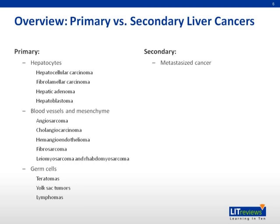Here's an overview of liver cancers, which is classified by primary liver cancer and secondary liver cancer, or metastatic cancer. There are various types of primary liver cancers, but the most common form is hepatocellular carcinoma, or HCC. One way to classify primary liver cancers is by the cell of origin, which includes hepatocytes, blood vessels, mesenchyme, or germ cells.